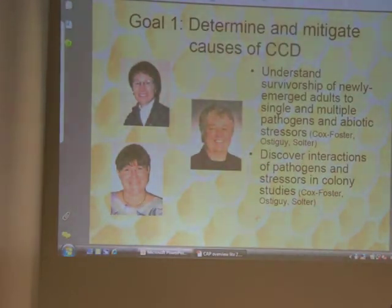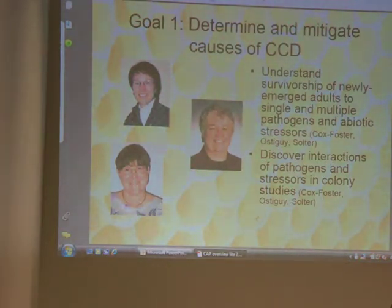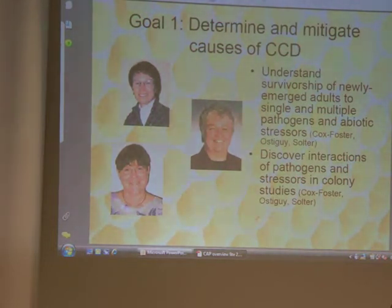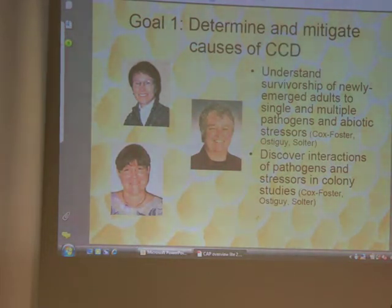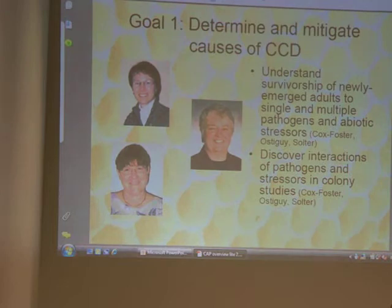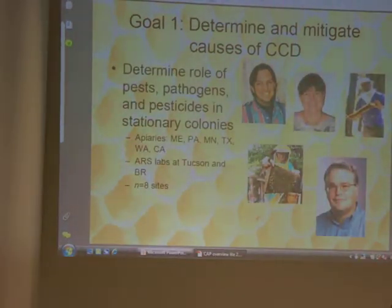We want to understand the survivorship of newly emerged adults to single and multiple pathogens and abiotic stressors. Abiotic stressors are exactly what we pour on these bees to treat them for our various problems. When we put a chemical in a colony, it creates a stress for those bees. How do these bees react to that stress plus having the stress of a pathogen or another problem in that colony? They're looking at interactions between pathogens and stressors in colonies — very in-depth studies that are going to tell us a lot about these bees, why things happen, and how things work with them.